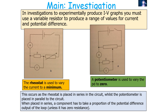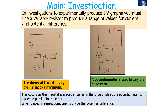When placed in series, a component always has to take a proportion of the potential difference output of that loop in the electrical circuit, unless it had zero resistance — which in the real world is never going to be the case. Because the rheostat is placed in series, it causes a division in the potential difference of that circuit. The rheostat will always take a part of the potential difference, so the circuit can only ever be varied to a minimum and not to zero.